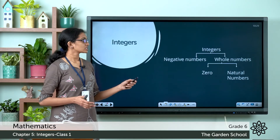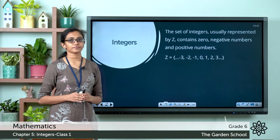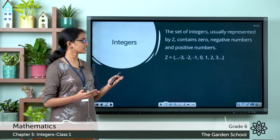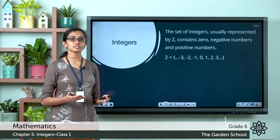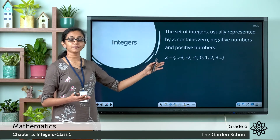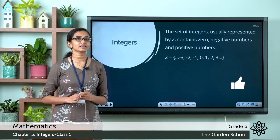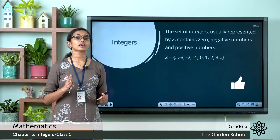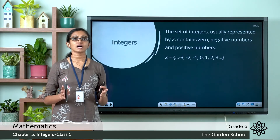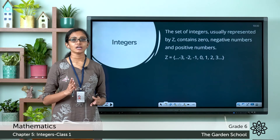The set of integers is usually represented by the capital letter Z. The set Z contains the elements: negative numbers, 0, and positive numbers. Note that 0 is neither considered positive nor negative — it is considered as a whole number and is neither positive nor negative.